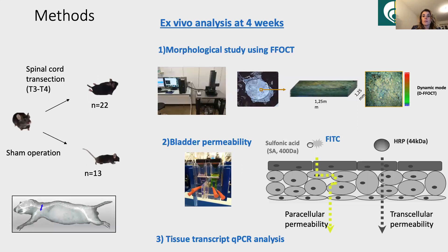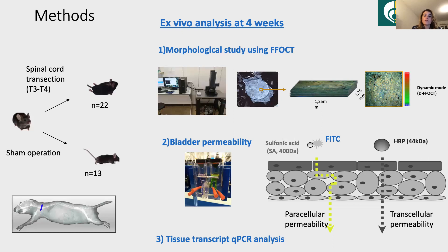Concerning the animal model, complete spinal cord transection was performed at the T3-T4 level. Sham mice were obtained after surgery without spinal cord transection using the same protocol. At four weeks, mice were sacrificed and bladders were removed for morphological study using FFOCT. Permeability studies were performed in Ussing chambers. Paracellular and transcellular permeability were assessed by measuring the flux of sulfonic acid and horseradish peroxidase, respectively, across the epithelial barrier from apical to serosal site. Finally, transcriptomic analysis was performed to characterize PUFA derivatives mRNA expression.